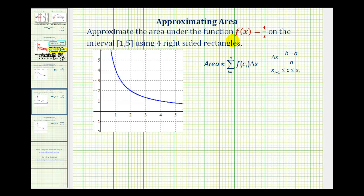We want to approximate the area under the function f(x) = 4/x on the closed interval from 1 to 5 using 4 right-sided rectangles. We just did this problem using 4 left-sided rectangles, and now we'll see how it's different when using right-sided rectangles.